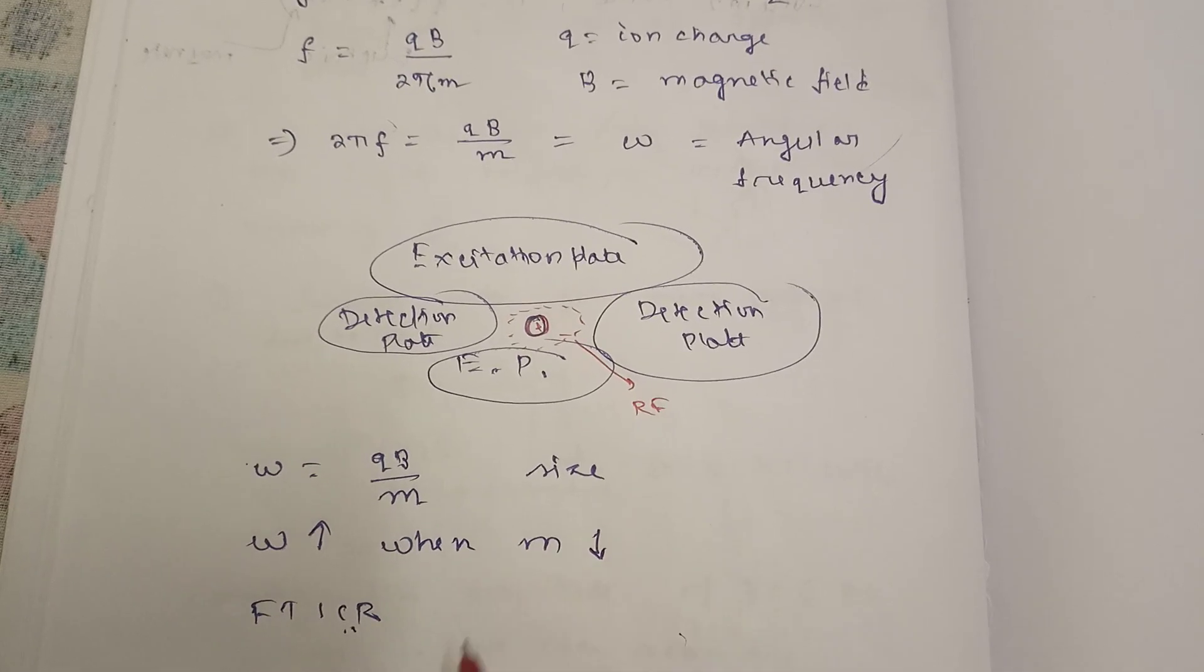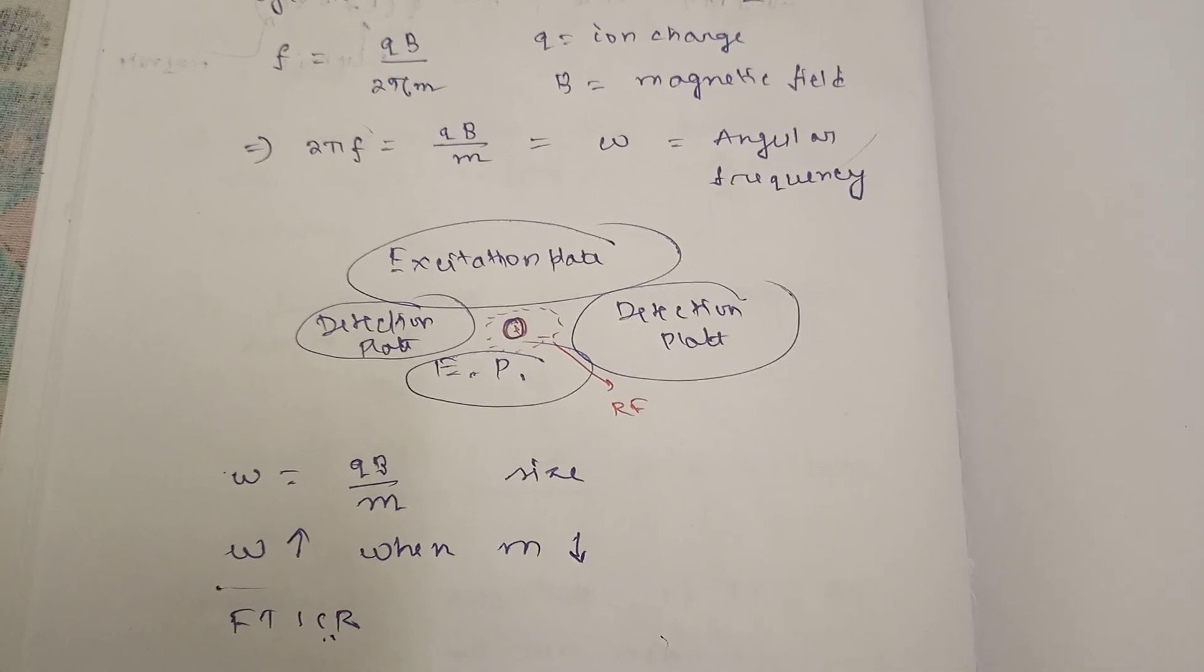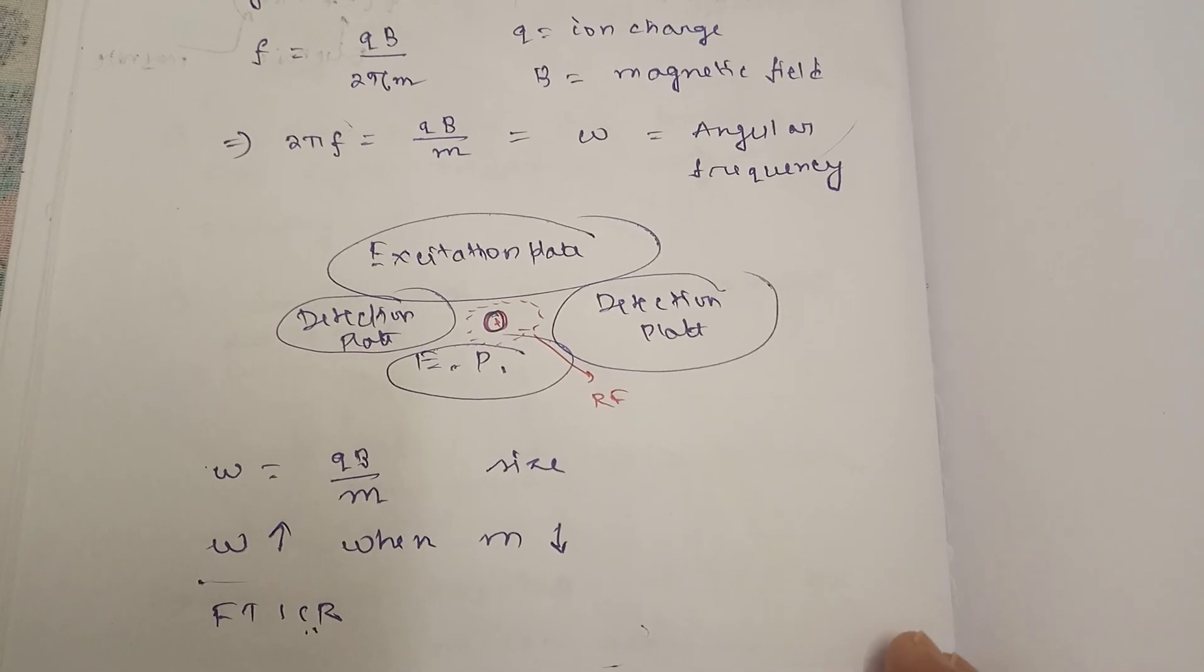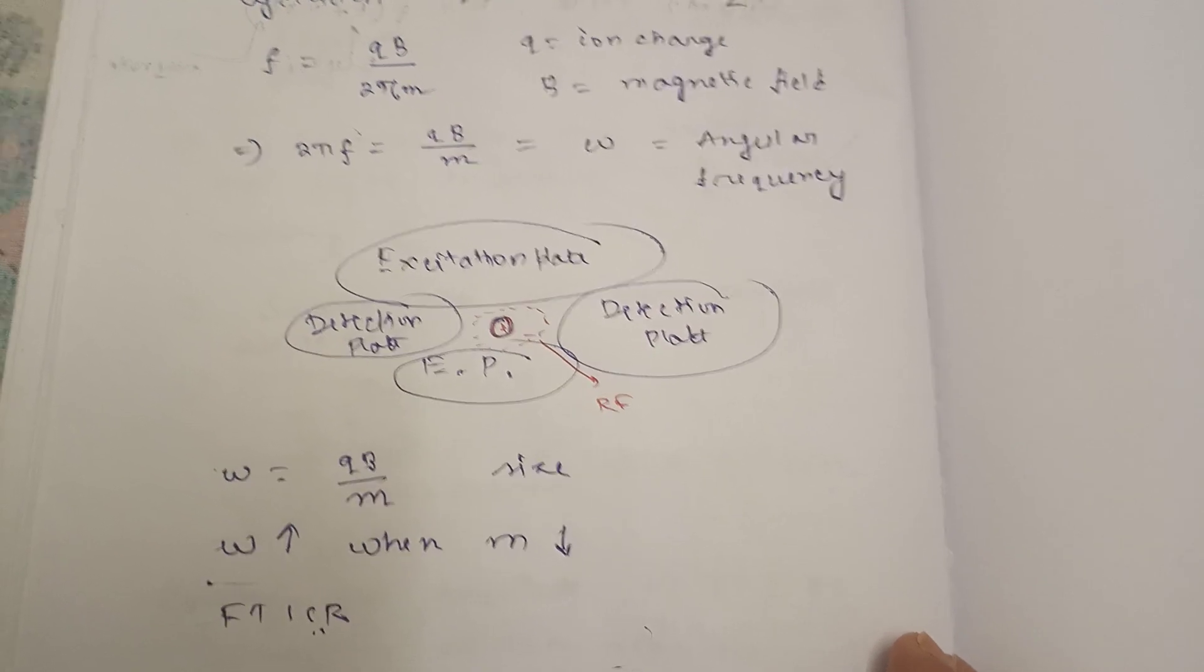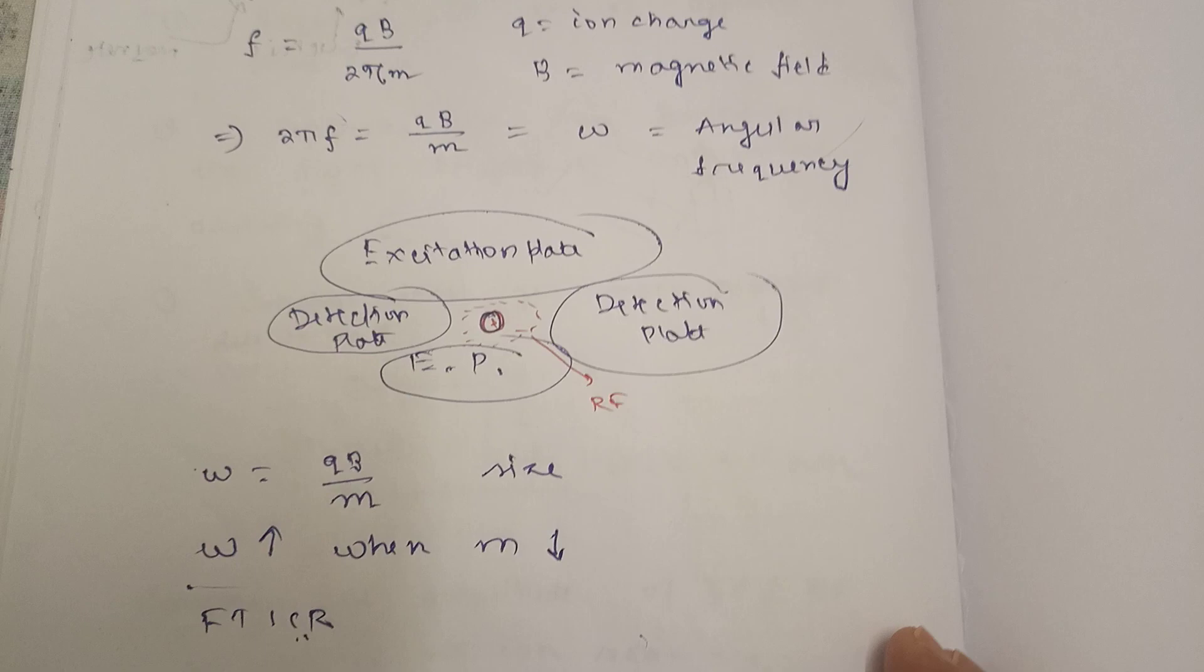So with this value and with these detectors, we can have a mass spectrum that is helpful to know the mass of unknown compounds and how FT-ICR helps us.